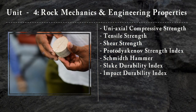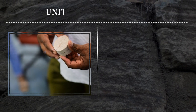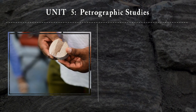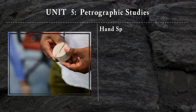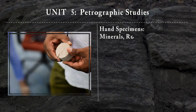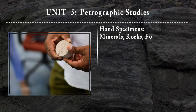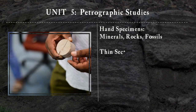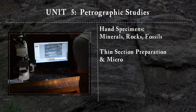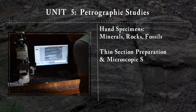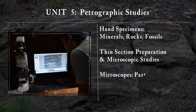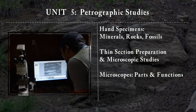Unit 5 will deal with various types of petrographic studies, including hand specimen studies of minerals, rocks, and fossils, the preparation of thin sections for microscopic studies. We will also cover various types of microscopes, their parts and functions.